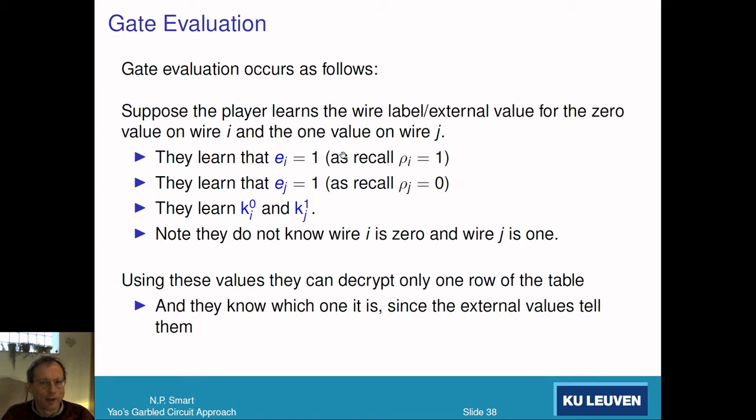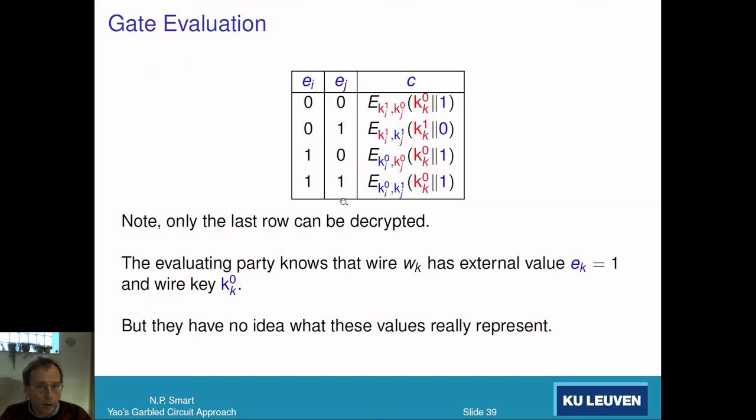How do we do evaluation? Assume we've got the wire label, external value for each wire. It tells you nothing about what the actual value is. External value is an encryption of that specific bit. Imagine we learn that e_i equals 1, ρ_i is 1, and e_j equals 1. So we learn k_i^0 and k_j^1, but we don't know that this corresponds to 0 or 1. With the indicator bits 1,1, we know we can decrypt the last row of the table. We decrypt this, learn k_k^0 and the external value of 1, and can carry on.